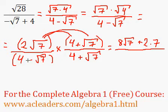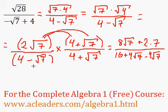All over, 4 times 4 is 16. 4 times root 7, 4 root 7. Negative root 7 times 4, negative 4 root 7. I'm just running out of room here. The last element would be negative root 7 times root 7, which is negative root 49, which is just equivalent to negative 7.